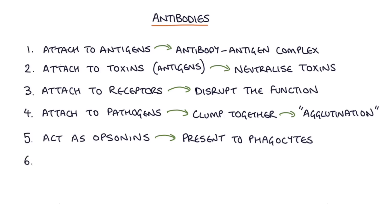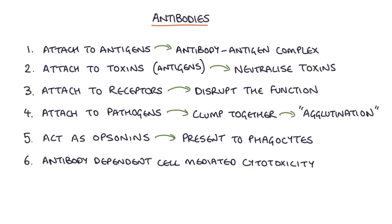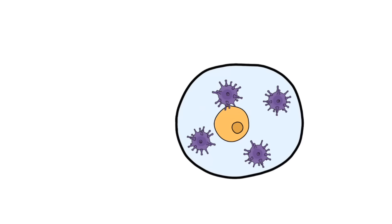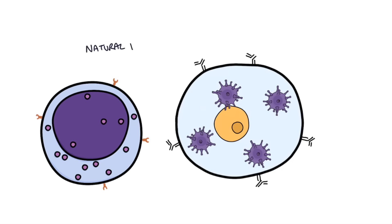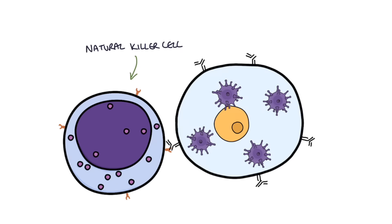The sixth thing is antibody-dependent cell-mediated cytotoxicity. This is where antibodies attach themselves to pathogens or abnormal cells and then help natural killer cells, neutrophils, macrophages, or eosinophils to recognize the pathogen and kill it.